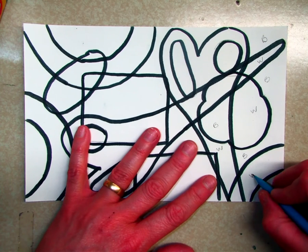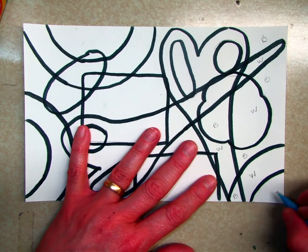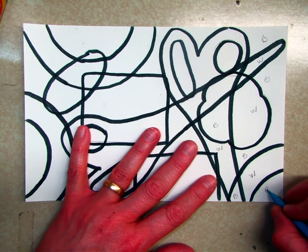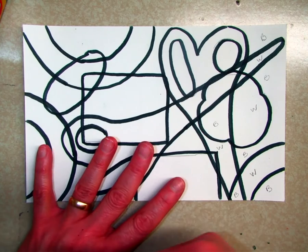Which means this is black, this is white, this would be black. This, since this is white, would be black. So you're going to do that throughout your whole picture.